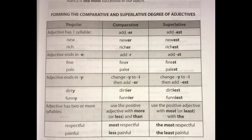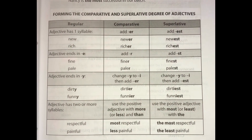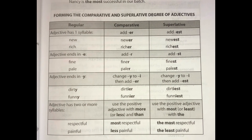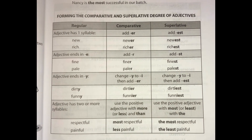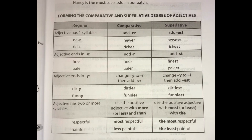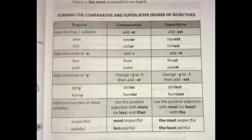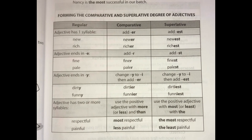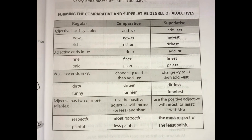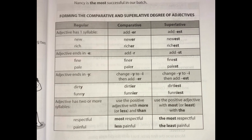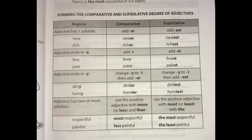Forming the comparative and superlative degree of adjectives. Regular adjective with one syllable: add -ER for comparative and add -EST for superlative. Example: new — comparative: newer, superlative: newest. Rich — comparative: richer, superlative: richest.